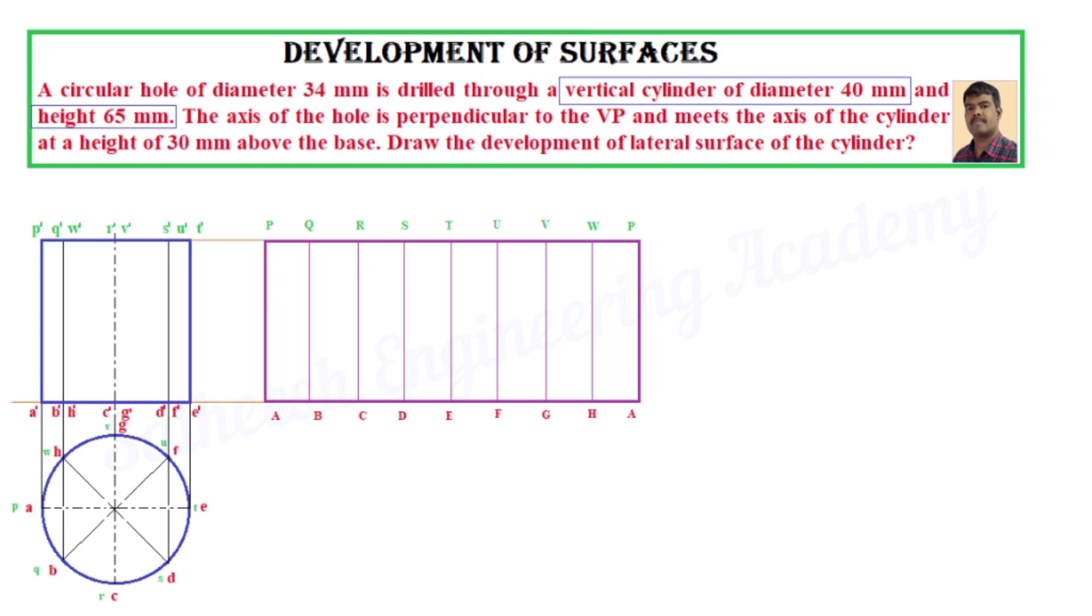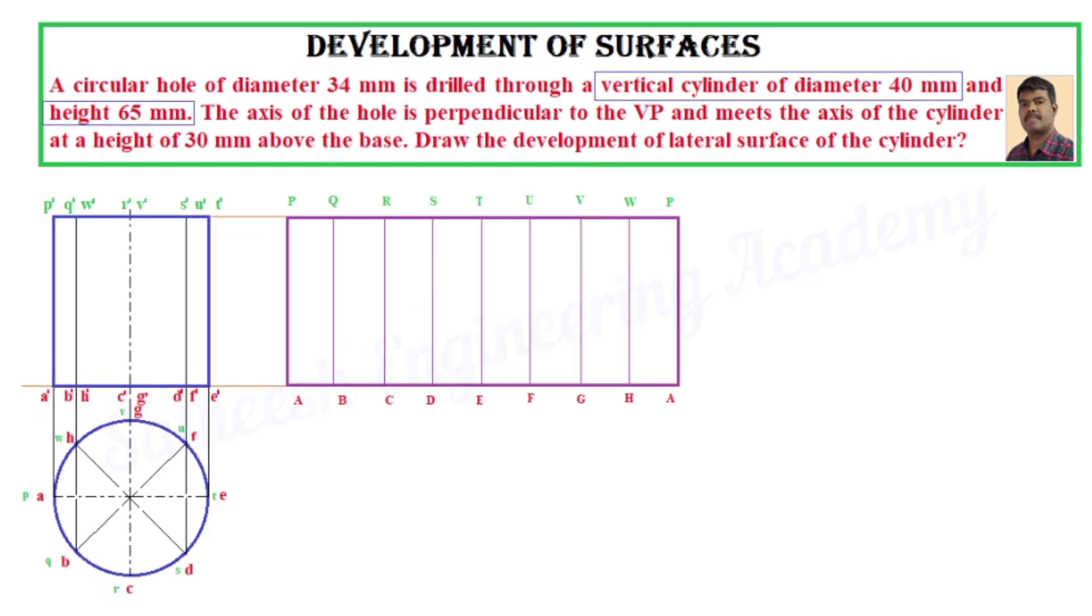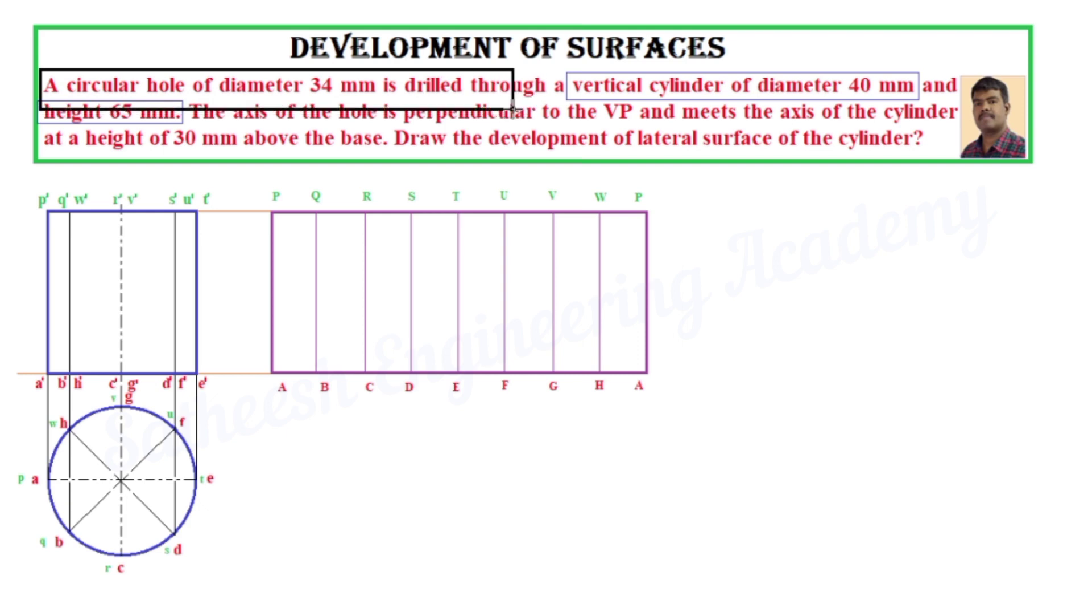Using the parallel development system, the development of the cylinder comes to a rectangular shape of size pi times d - the circumferential distance of the given diameter. Assign letters in capital letters ABCD in top surface, PQRS, etc.